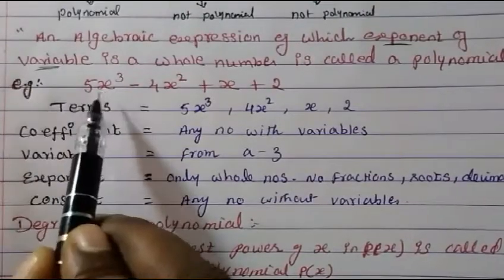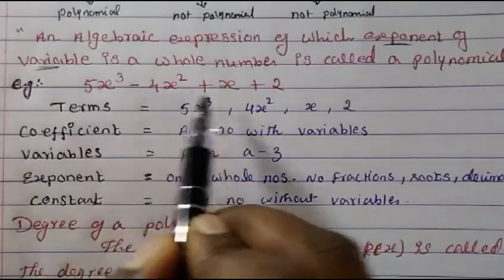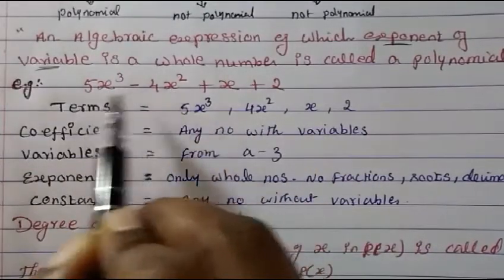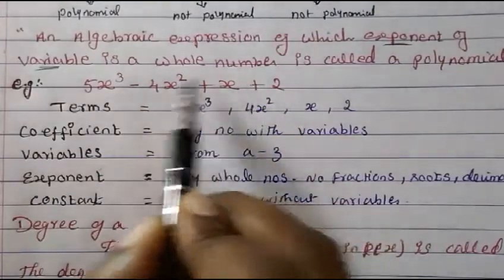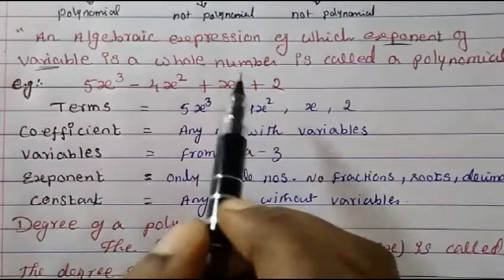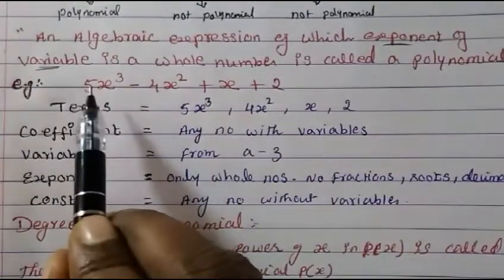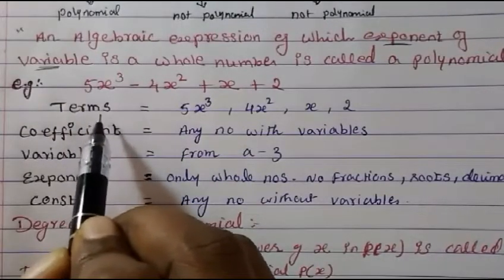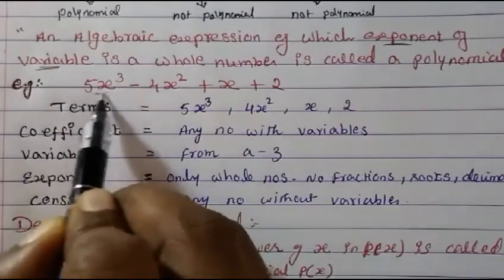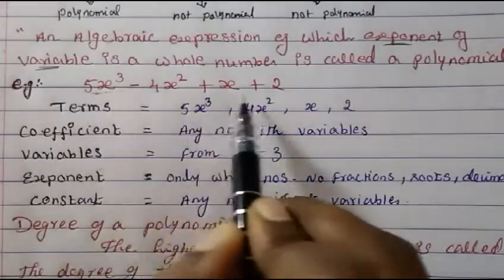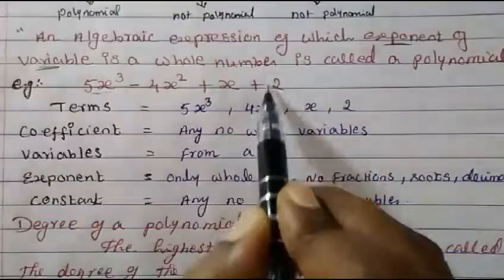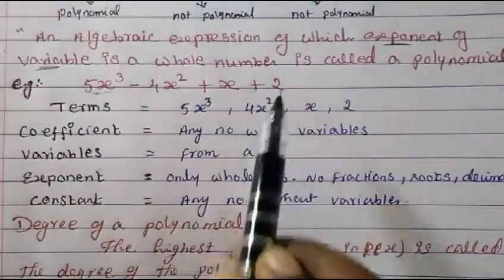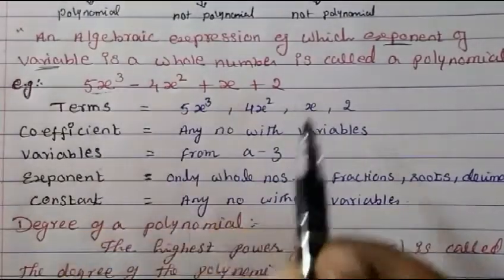We have taken the expression 5x³ - 4x² + x + 2. The variables' powers are whole numbers, so this is a polynomial. In this polynomial, let's see each part and how we call it. First, terms: 5x³, 4x², x, and 2 — all of these are called terms. There are 4 terms here.